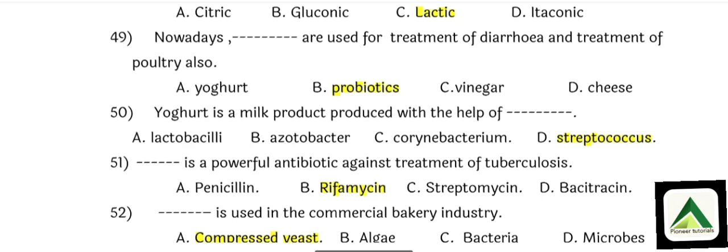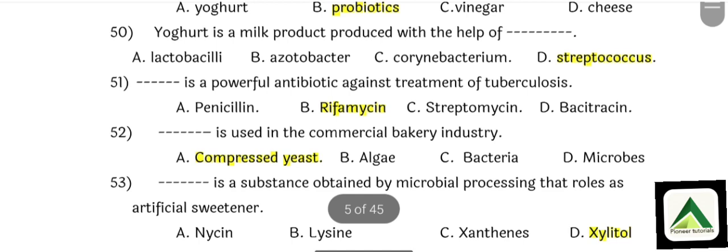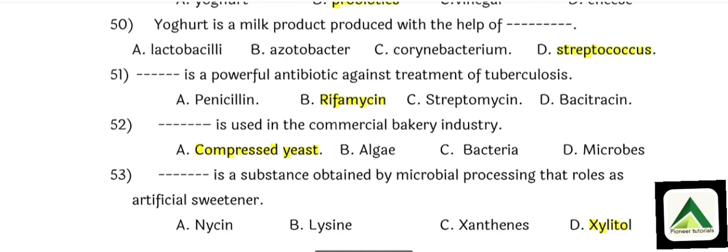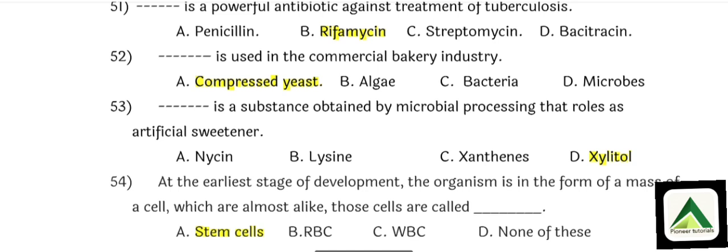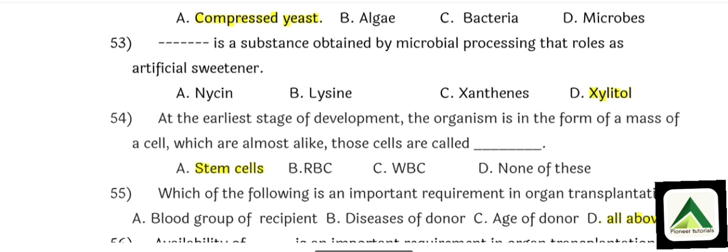Question number 50: Yogurt is a milk product produced with the help of option number D: Streptococcus. Question number 51: Dash is a powerful antibiotic against treatment of tuberculosis. That is option number B: Rifamycin. Question number 52: Dash is used in the commercial bakery industry. That is option number A: Compressed yeast. Question number 53: Dash is a substance obtained by microbial processing that works as an artificial sweetener. Option number D: Xylitol.